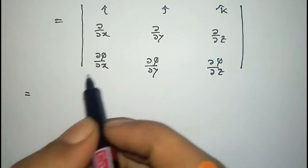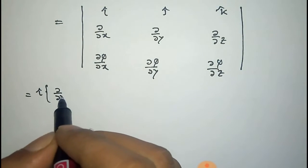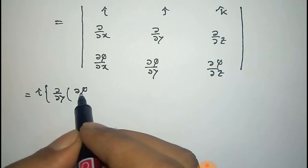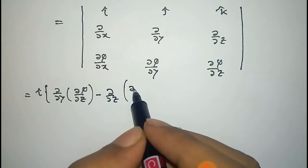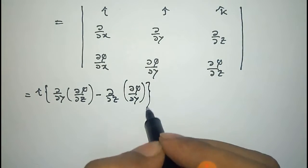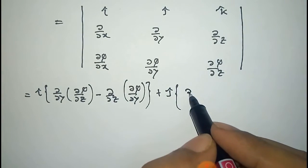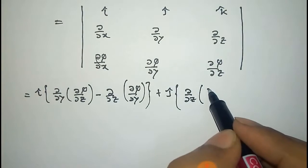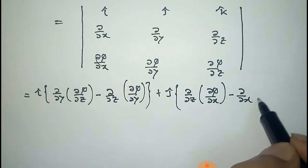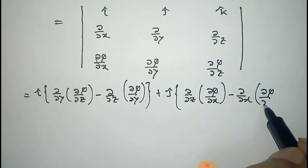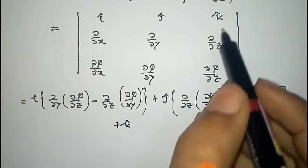Now expanding this determinant: with respect to i-cap, we get del/del y of (del phi/del z) minus del/del z of (del phi/del y). For the j-cap component, we get del/del z of (del phi/del x) minus del/del x of (del phi/del z).